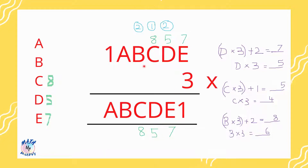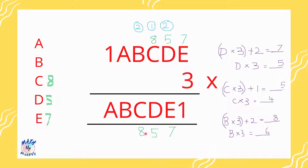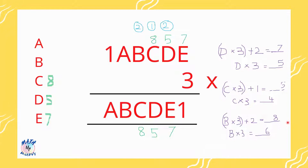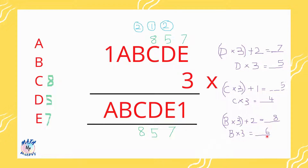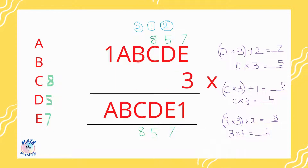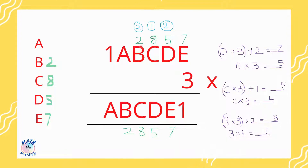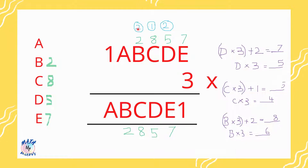Now moving to the next digit, b. b times 3 with the carried-over 2 will give a number ending in 8. When you move the 2 to the other side, b times 3 alone ends in 6. Looking at the 3 times table, 2 times 3 ends in 6, so I assume b to be 2. I substitute b as 2 in both places and note it down. 2 times 3 is 6, plus the carried-over 2 gives 8 — which matches.